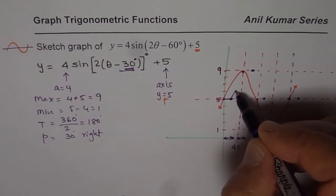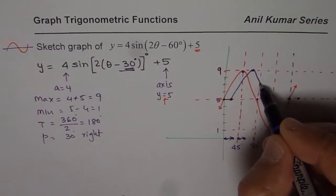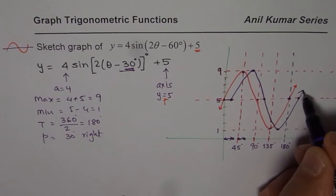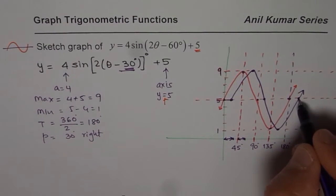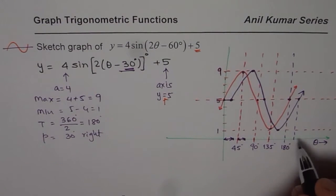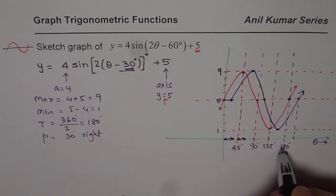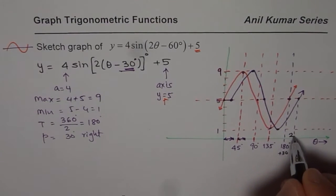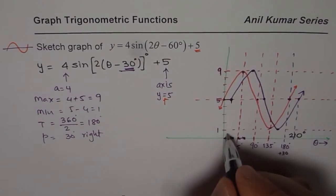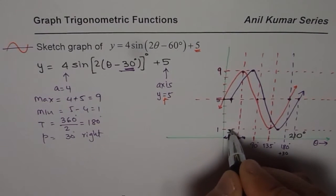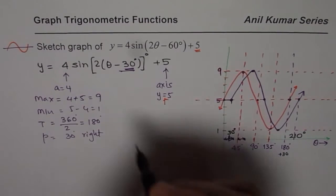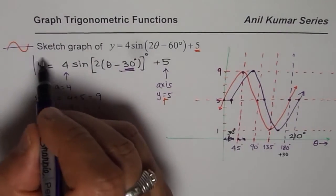It's very important to label these two points. When I add plus 30 to 180 I get 210, so this is 210 degrees. The starting point here will be at 30 degrees. So that is how my final graph is going to be.